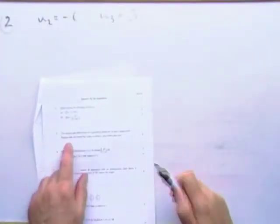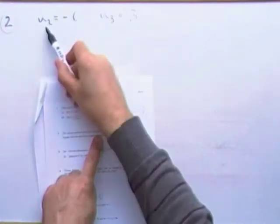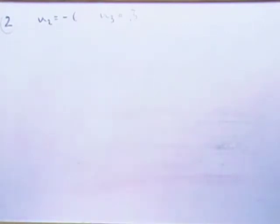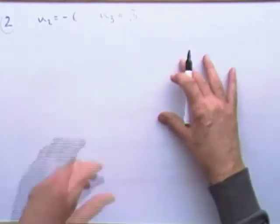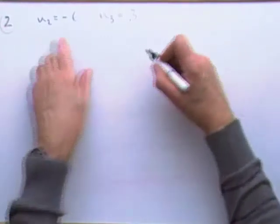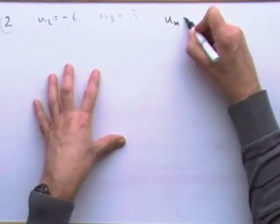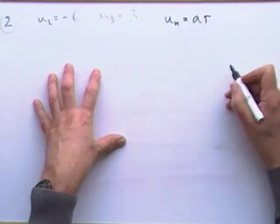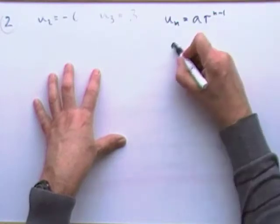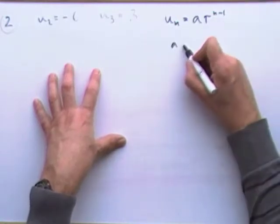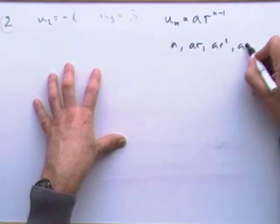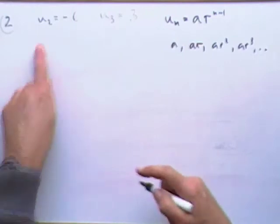Number 2. The second and third terms of a geometric series, u2 or negative 6 and u3, 3. Why has it got a sum to infinity and obtain this sum? For 5 marks. Well, a geometric series should look like this. Un should be the first term a times the common multiplying ratio to the power n minus 1. You start with a term a and then you keep multiplying by r to generate the successive terms.